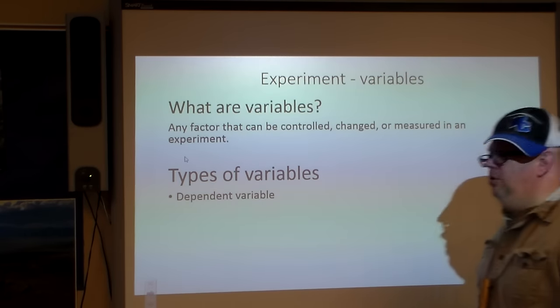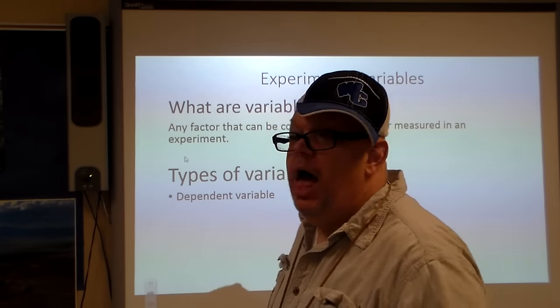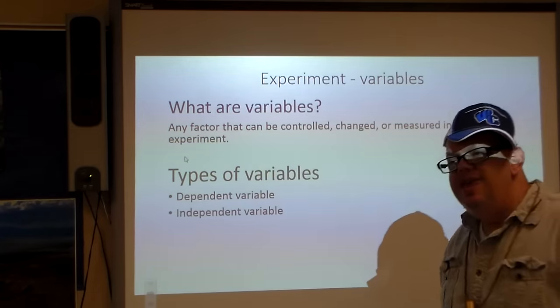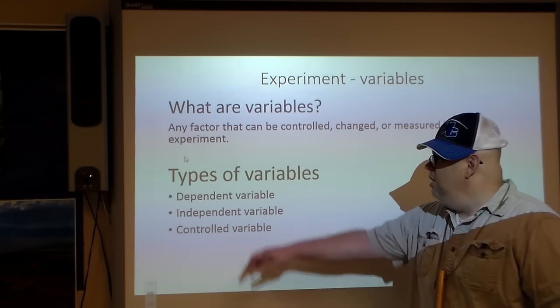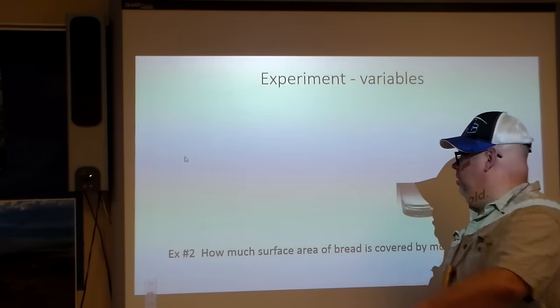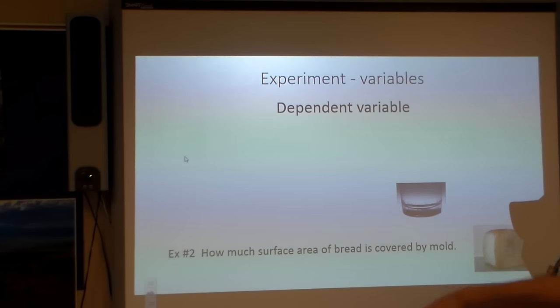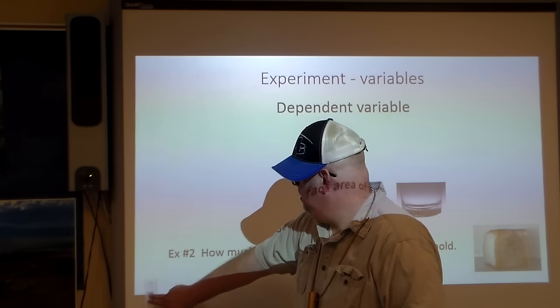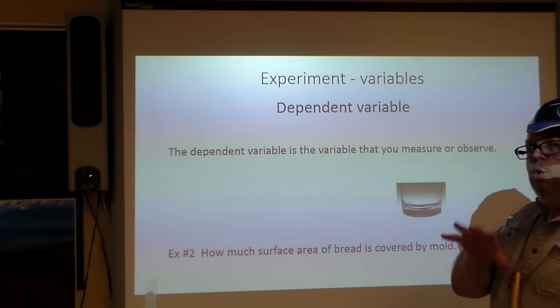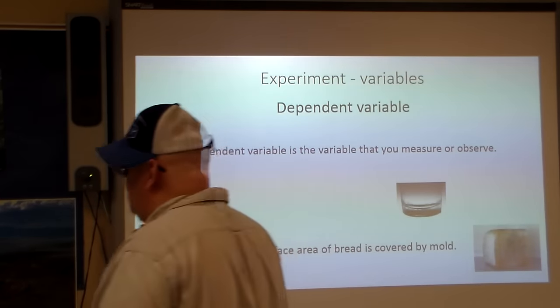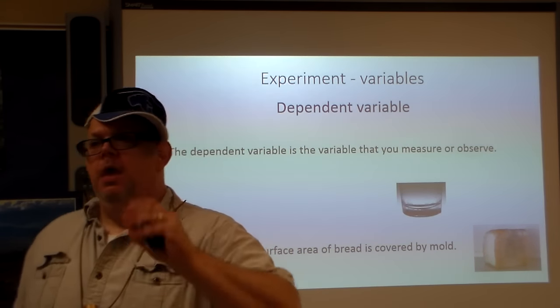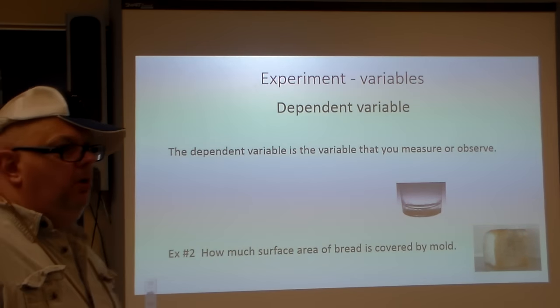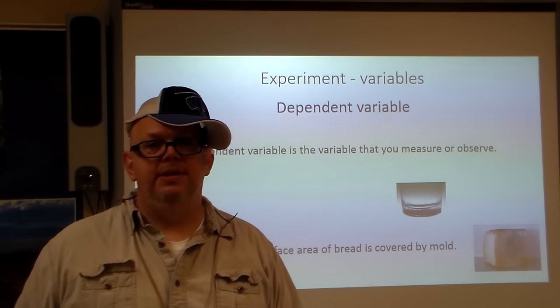But anyways, types of variables that we have here. There's that dependent variable. You know, when you're depending on something. Like, I depend on my car to get me to work. And there's the independent variable. And then there's the controlled variable. So we have dependent, independent, and controlled variable. The dependent variable is the variable that we are going to measure or observe. You don't control the dependent variable ever. This is what you're going to see. Think of this as your results.